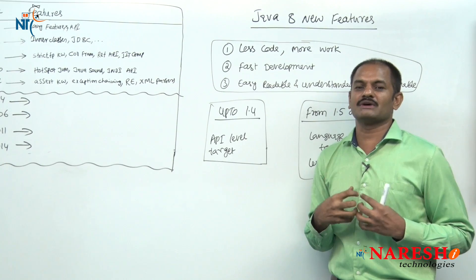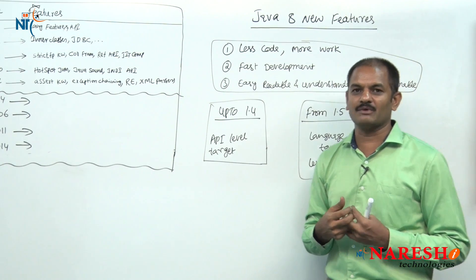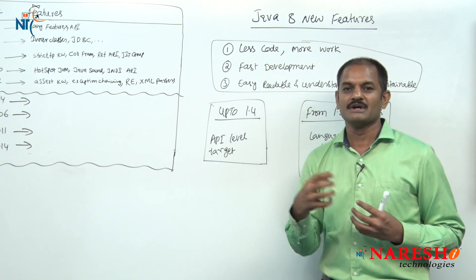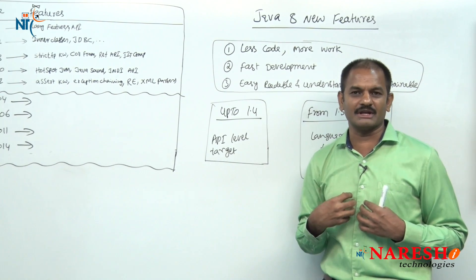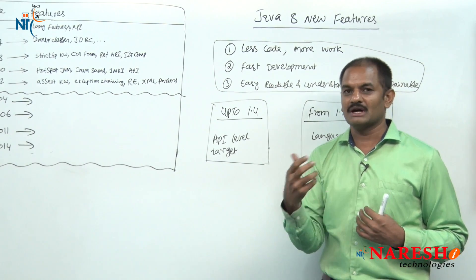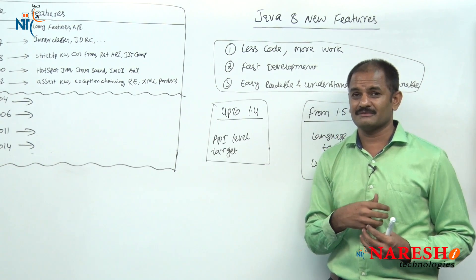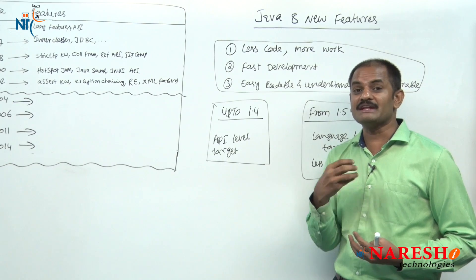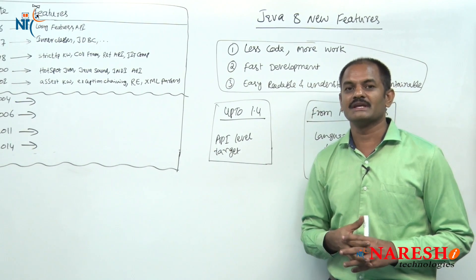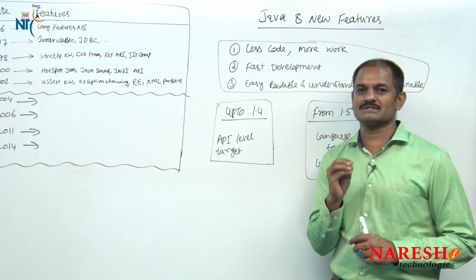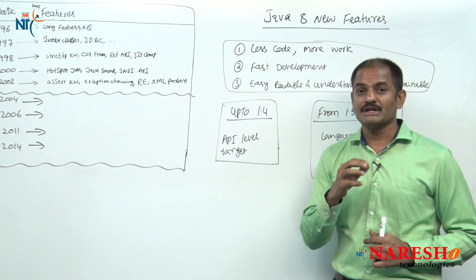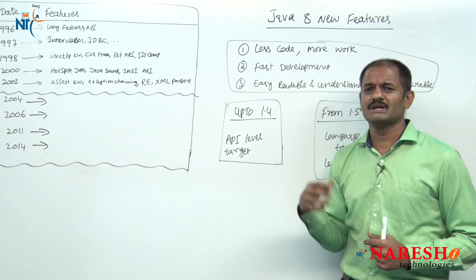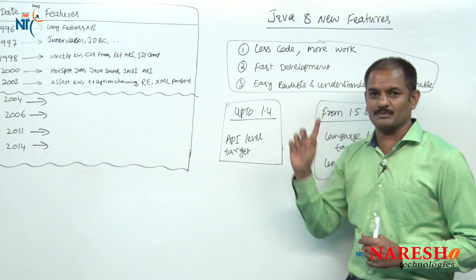Up to version 1.4, Sun Microsystems' target and focus is on preparing APIs — reusable classes. For example, if I want to group objects in my project, and you want to group objects in your project, and another project also needs to group objects — instead of every programmer writing the same code, Sun came up with a predefined class. That predefined class is generally called an API. So Sun Microsystems' target was providing reusable API classes as many as they could up to version 1.4.